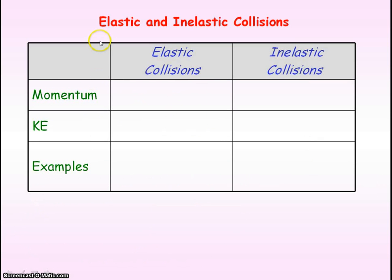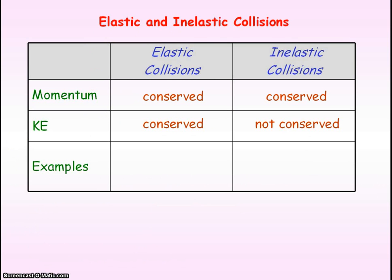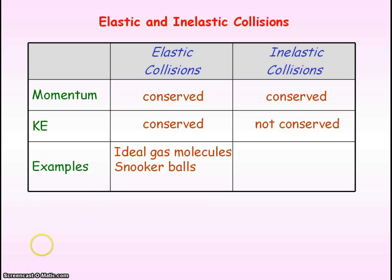We'll now consider two types of collisions: elastic collisions and inelastic collisions. Momentum is conserved in any type of collision as long as it's a closed system. What differentiates an elastic from an inelastic collision is whether kinetic energy is conserved — KE is conserved for elastic collisions but not for inelastic collisions. There are very few real-life examples of elastic collisions, but we can consider gas molecules and snooker balls as colliding elastically. There are many examples of inelastic collisions, such as car crashes, where the car deforms and that requires energy.